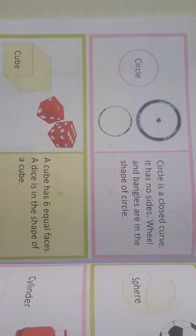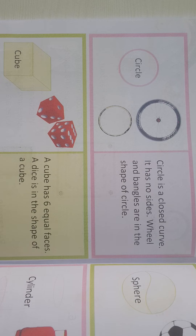So those were the plane shapes. Now the second type of shapes are solid shapes, which are solid from the inside. We call them three-dimensional shapes.